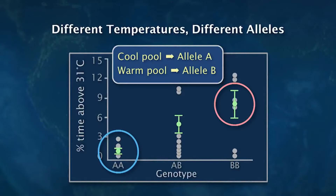A and B alleles are just different versions, different DNA sequences at the same gene.